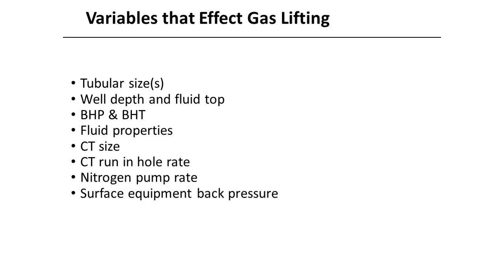Variables that affect gas lifting operations are: tubular size, well depth, fluid top depth, bottom hole pressure, bottom hole temperature, fluid properties, coiled tubing size, coiled tubing run-in-hole rate, nitrogen pump rate, and surface equipment back pressure.